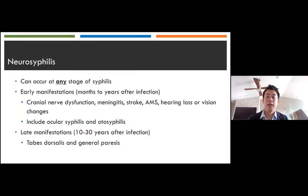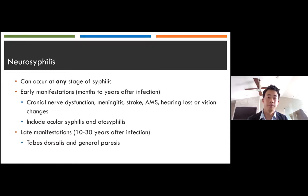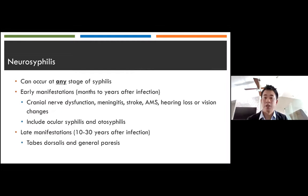Remember, neurosyphilis can occur at any stage of syphilis. Early manifestations usually occur months to years after infection and include cranial nerve dysfunction, meningitis, stroke, altered mental status, hearing loss, or vision changes. Neurosyphilis also includes ocular and otosyphilis. Late manifestations, typically occurring 10 to 30 years after infection, include tabes dorsalis and general paresis, in which people can present with dementia, psychosis, gait disturbances, lightning pains, or incontinence.